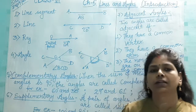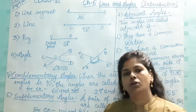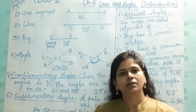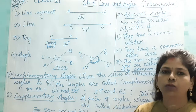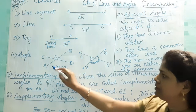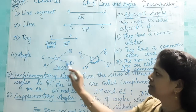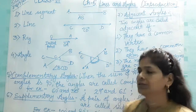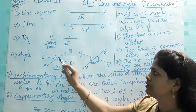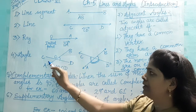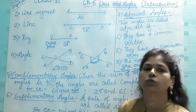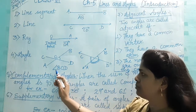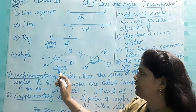Now next is angle. When two line segments or two lines meet or cross each other at one point, then they form an angle. Here, two line segments AB and CD intersect at a point O. Then angle BOD, COB, AOC, and AOD are formed. This is referred to as angle BOD.